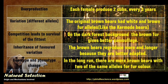Let's look at the example of the brown bear. Each female can produce two cubs every three years. The original brown bears might have had white and brown fur alleles, like the kermode bears that exist today. On the dark forest background, the brown fur gives better camouflage. The brown bears reproduce more and longer because they are better adapted. In the long run, there are more brown bears with two of the same alleles for dark brown fur color.